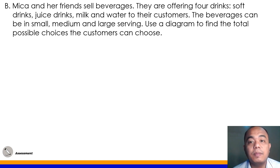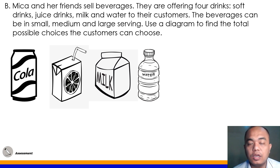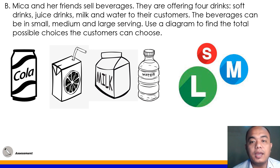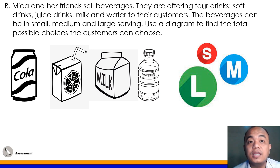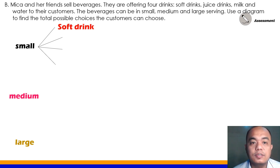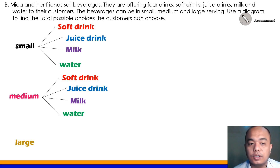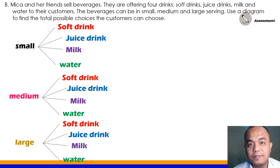Si Mika at ang kanyang mga kaibigan ay nagbibenta ng mga drinks — soft drink, juice drink, milk, and water — sa different sizes: small, medium, and large. We will create a diagram na nagpapakita sa mga possible choices ng mga customer nila. Sa small, meron silang pagpipilian na apat: small soft drink, juice drink, milk, and water. Meron din medium size na soft drink, juice drink, milk, and water. Pwede rin makapili ang customer ng large: soft drink, juice drink, milk, at saka water. These are the possible choices that the customers may choose.